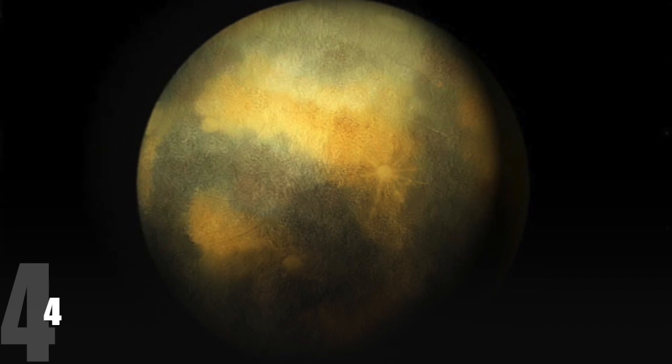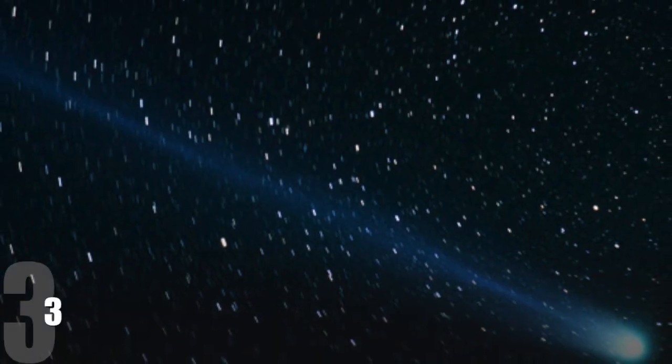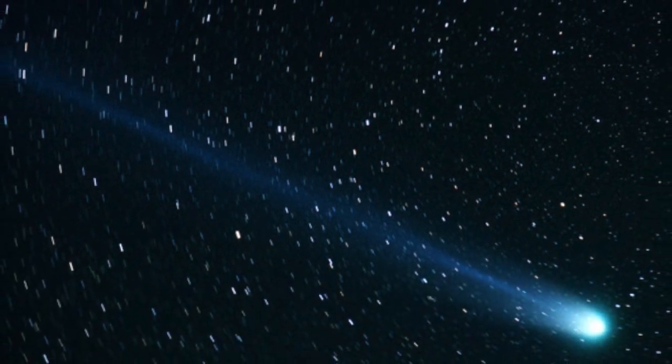When it was first discovered, Pluto was just given the generic name, Planet X. 3. If you could bring Pluto closer to the sun, it would sprout a tail and become a comet. 2.